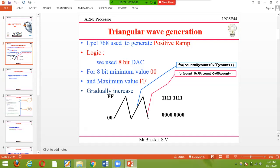Previously we discussed 0x00 to 0xFF. To get this, we use a for loop: count equals 0, count less than 0xFF, and count++. If you want to decrease the count, initial value is 0xFF and it gradually decreases to zero using count--. Simple logic.